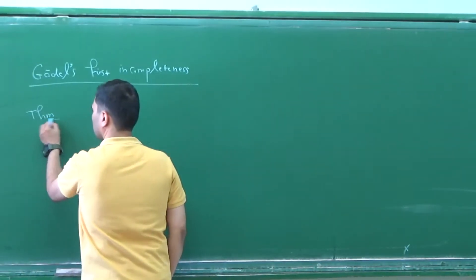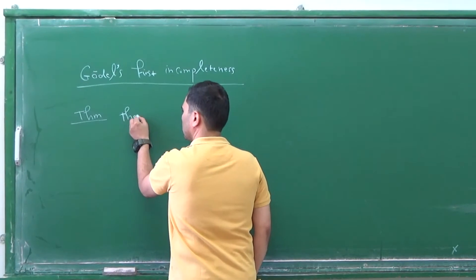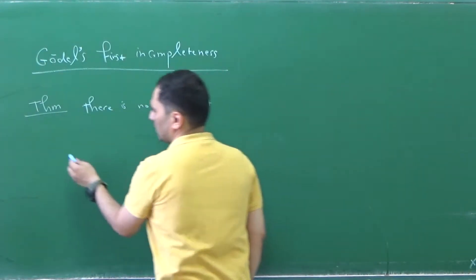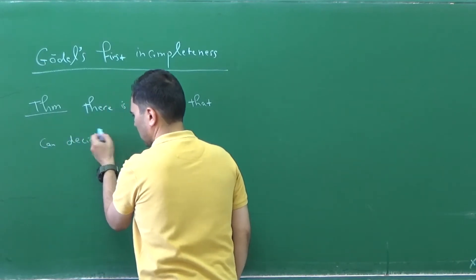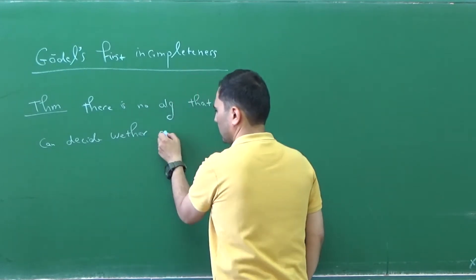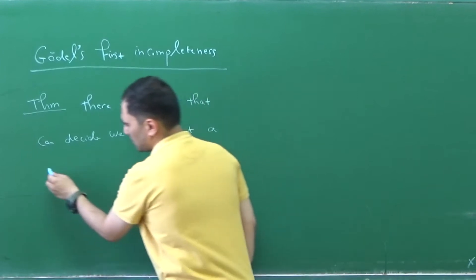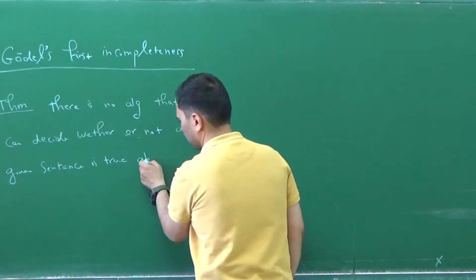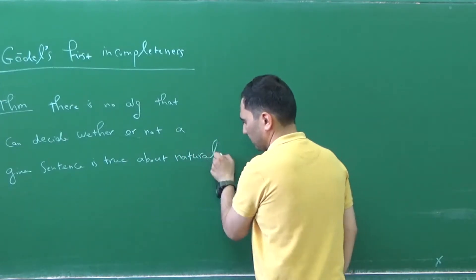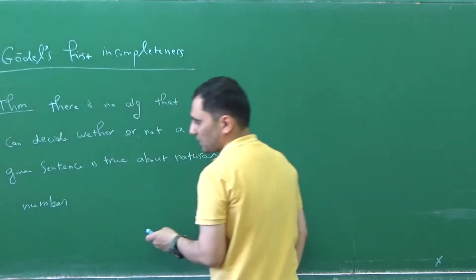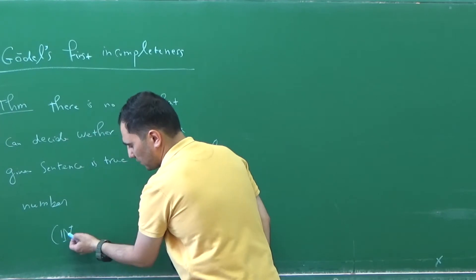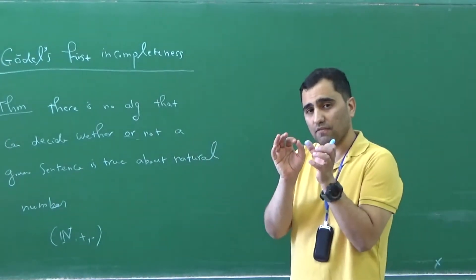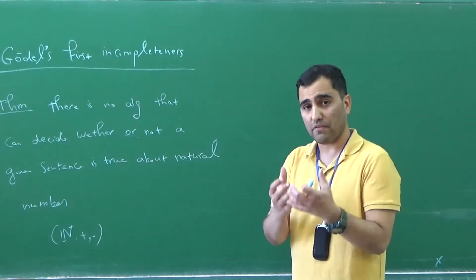The theorem is as follows: there is no algorithm that can decide whether or not a given sentence is true about natural numbers. When I say natural numbers, I mean the structure N as the set of natural numbers, addition and multiplication. The theorem says that there is no algorithm that can tell you whether or not a sentence phi is true, or a theorem about natural numbers. You cannot replace number theory with a computer algorithm.